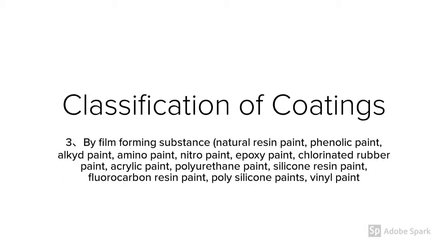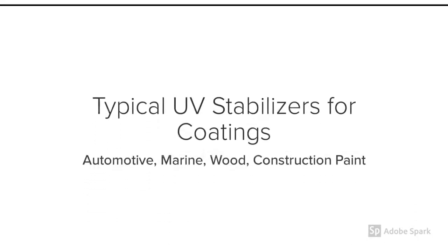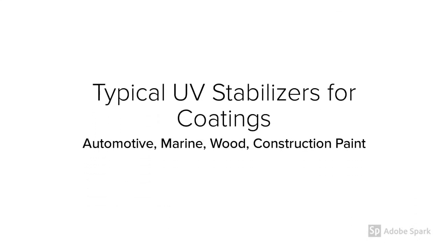When classified by film-forming substance, coatings include natural resin paint, phenolic paint, alkyd paint, amino paint, nitro paint, epoxy paint, chlorinated rubber paint, acrylic paint, polyurethane paint, silicone resin paint, fluorocarbon resin paint, polysilicon paints, and vinyl paint. Typical UV stabilizers for coatings are as follows.